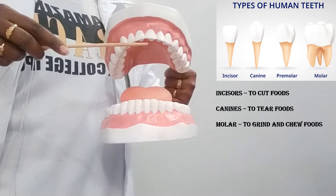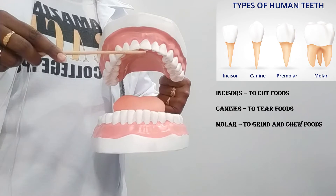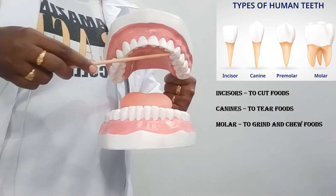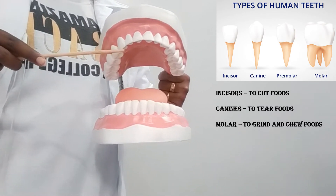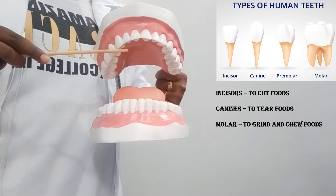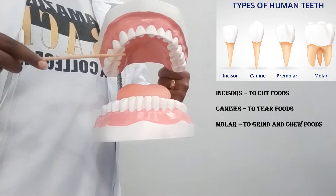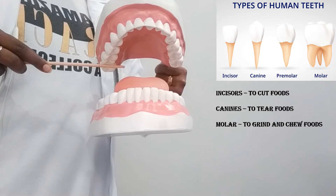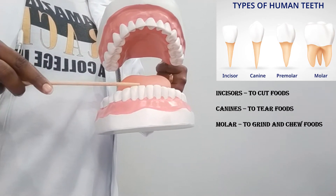Incisors are spelled I-N-C-I-S-O-R-S. On the right and also the left part, you can see a sharp teeth. This is the one we call canines, spelled C-A-N-I-N-E-S. And the following teeth are known as molars. The same applies at the bottom — the lower jaw.